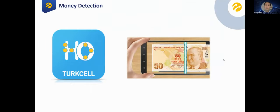Another solution is money detection, developed specifically for disabled people and not for commercial reasons. Using a mobile application, disabled people take a photo of a banknote and our algorithm identifies the denomination. Then, using our text-to-speech algorithm, the application reads the denomination to the disabled person.